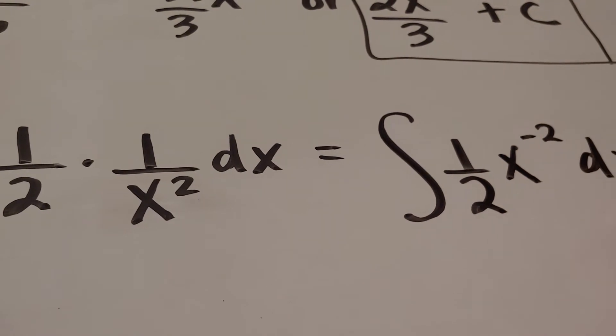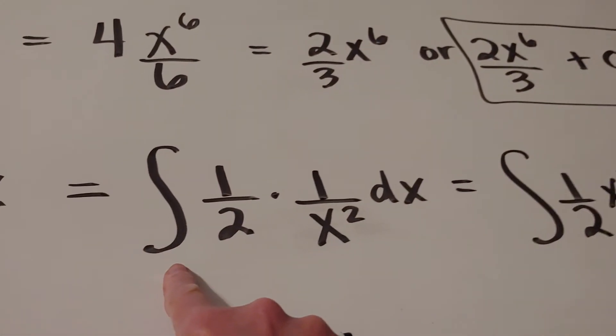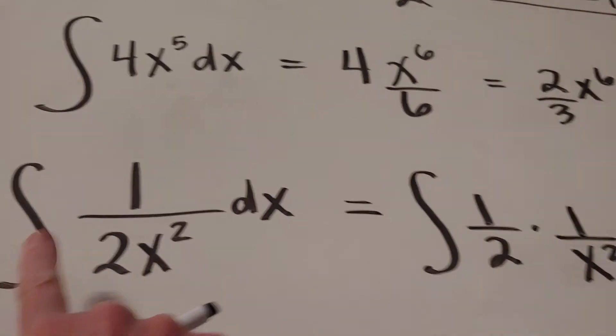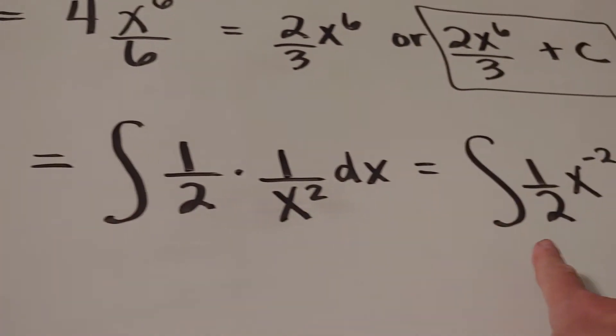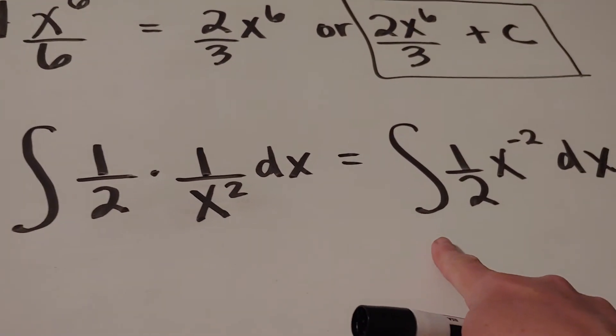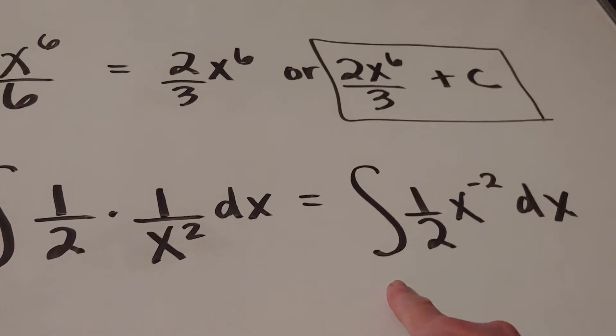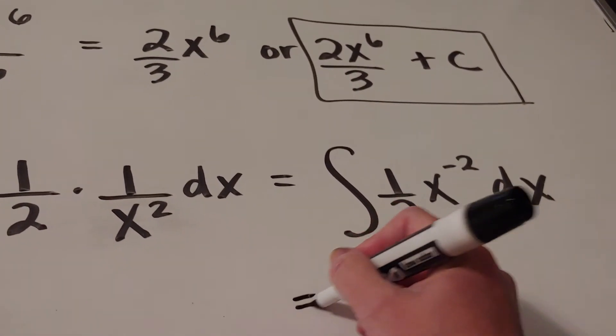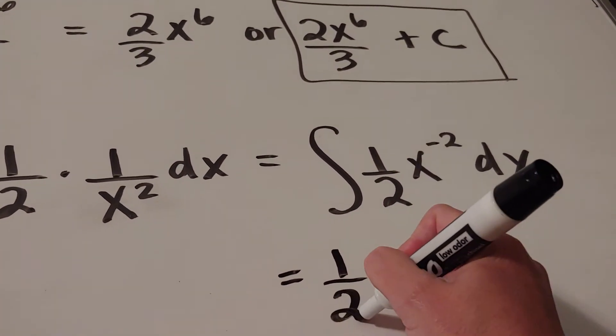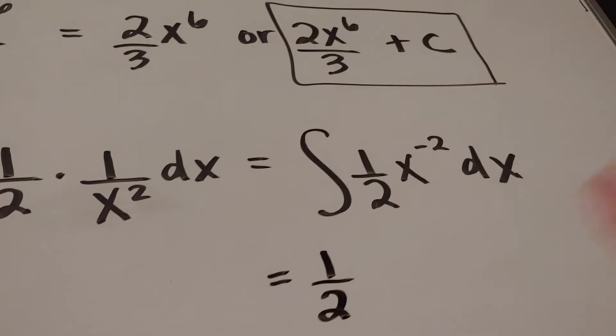Now you may be realizing, wow, Jen, you keep rewriting all these integral symbols. Why do you keep rewriting all these integral symbols? Because I haven't taken an antiderivative yet. So that's my way of telling who's ever looking at my work that, hey, I haven't done the add a 1 and then divide thing. Okay, once that symbol is gone, I now am doing the add a 1 and then divide.